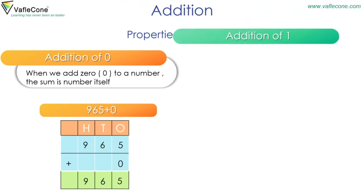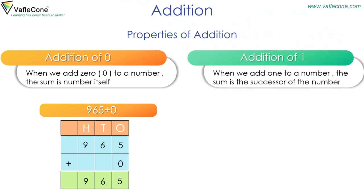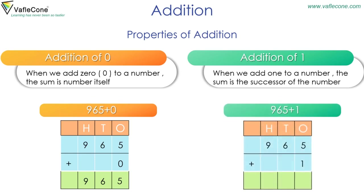Addition of one: when we add one to a number, the sum is the successor of the number. For example, 965 plus one is equal to 966.